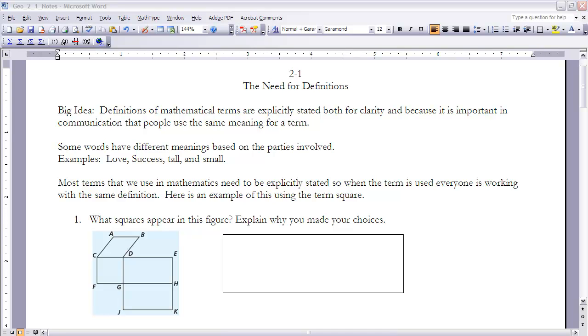It's really left up to the person using the word to determine what they mean by that word. In math, and especially in geometry, we have to be much more specific with how we're defining things. Most terms that we use in mathematics need to be explicitly stated. When the term is used, everyone is working with the same definition.